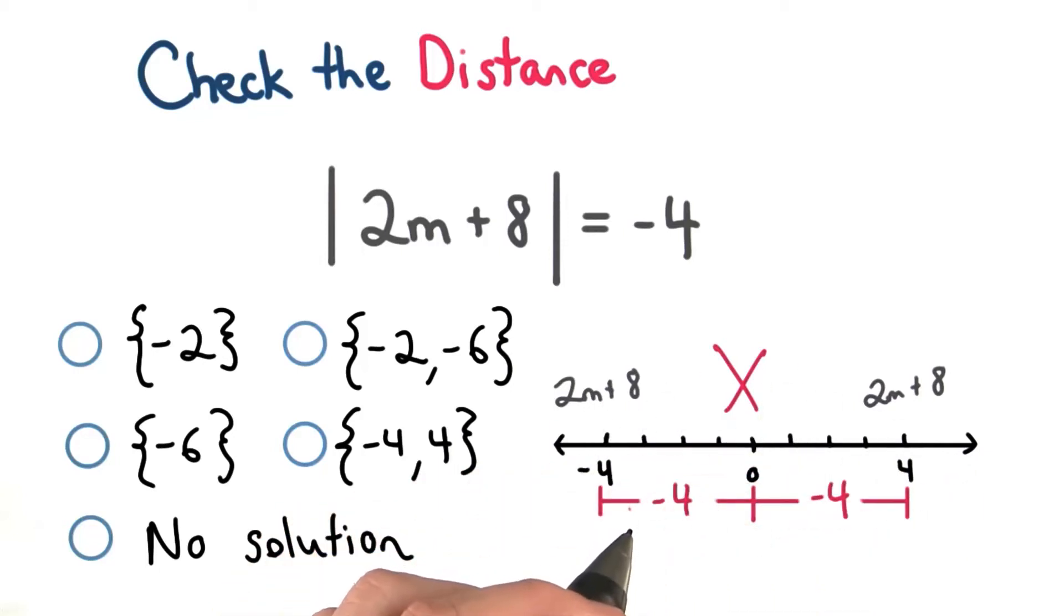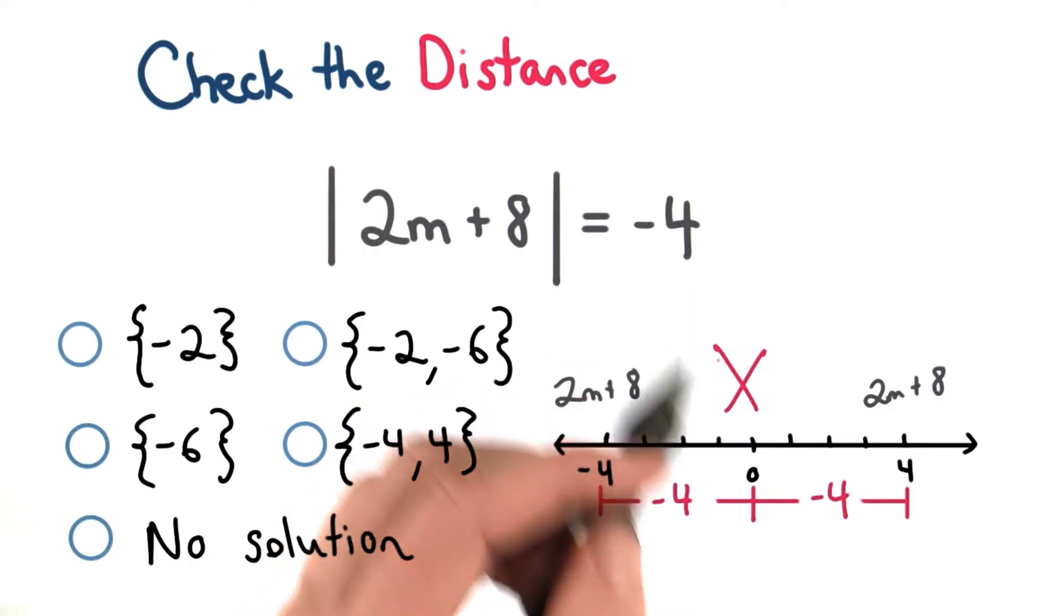If you drew out a diagram, it probably looked like this. But the distance from 0 was negative 4, and that can't be right.